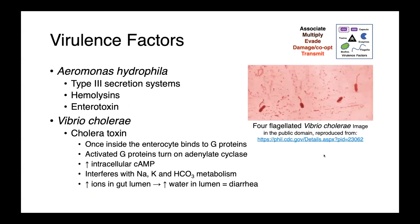Aeromonas hydrophila produces a number of important virulence factors, including type III secretion systems — those needle-and-syringe-like apparatus for injecting effector molecules — hemolysins, and also enterotoxins. Vibrio cholerae, which you can see in this gram-stained image, has a flagellum, so it's a motile organism. It also produces cholera toxin.